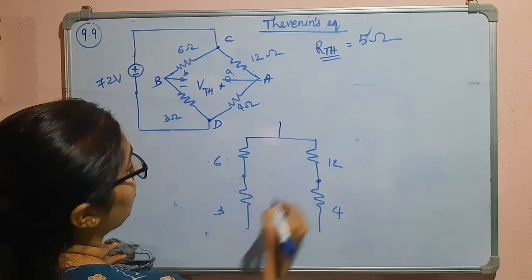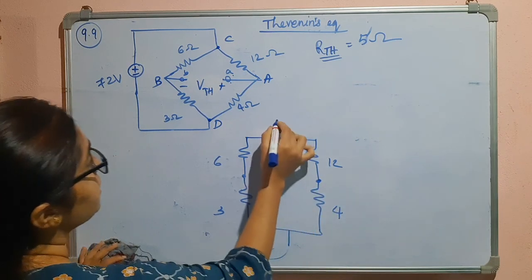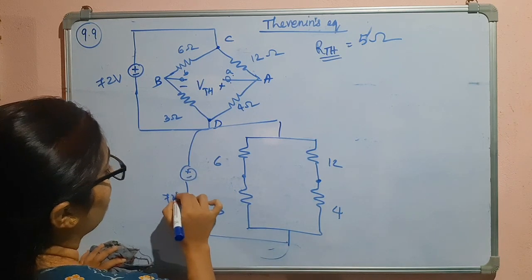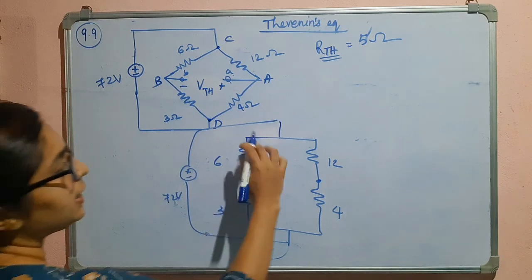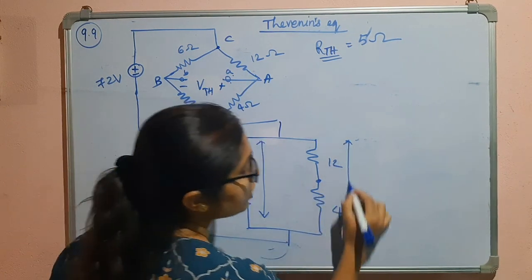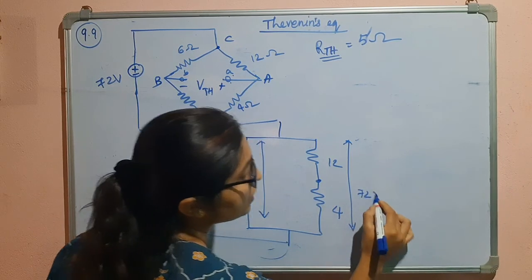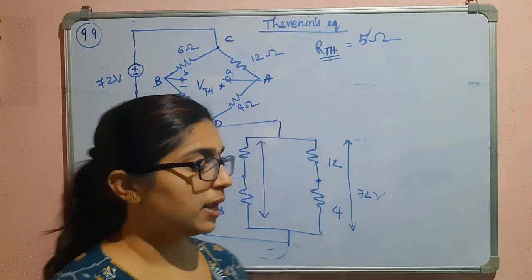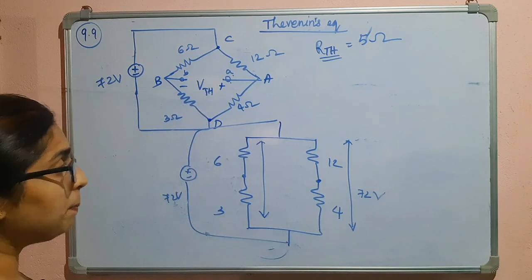So here we have to measure it. This is 72 volts. Since this is 72 volts, we can say that across this combination also it is 72 volts, across this combination also it is 72 volts, because these are in parallel. The voltage remains same when they are connected in parallel.